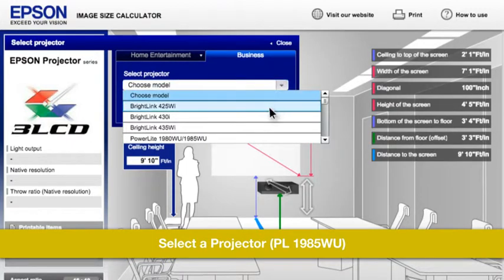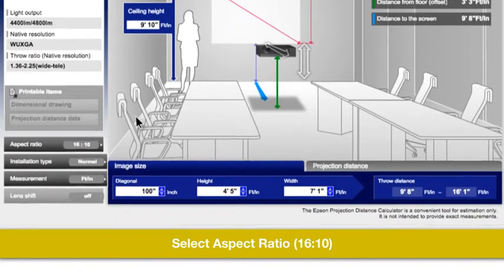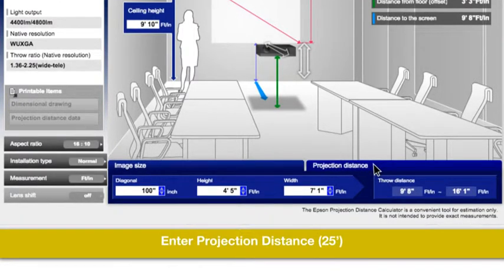Again, select the projector, PowerLite 1985 WU. Select your aspect ratio, 16 to 10. And instead of using screen size, switch over to the distance tab.